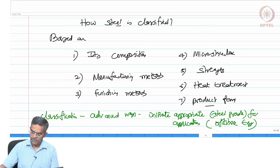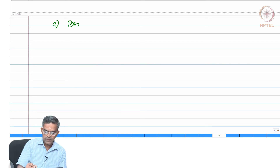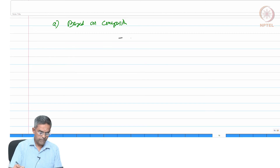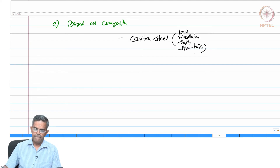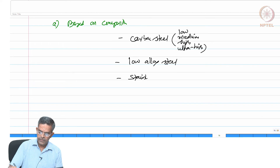Based on composition, steel is classified as: carbon steel — with sub-varieties of low, medium, high, and ultra-high carbon content — low alloy steel, and stainless steel.